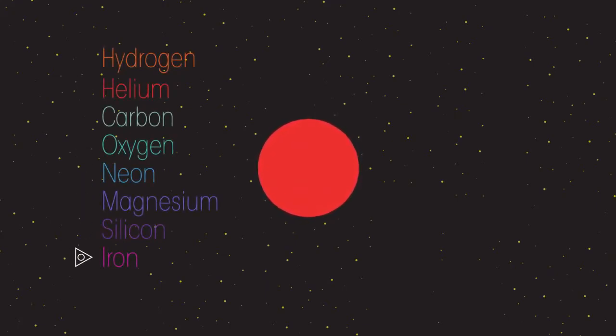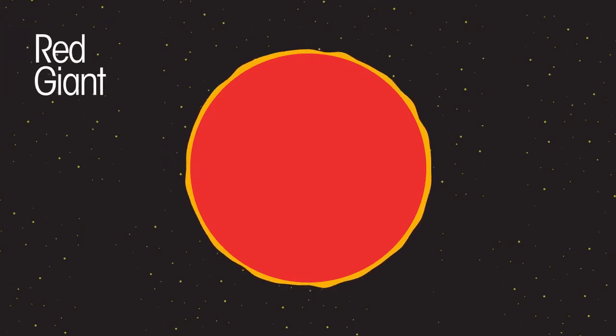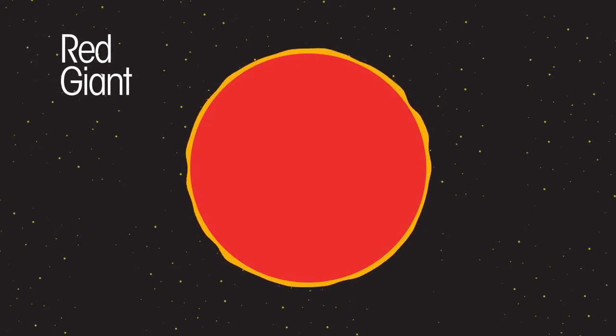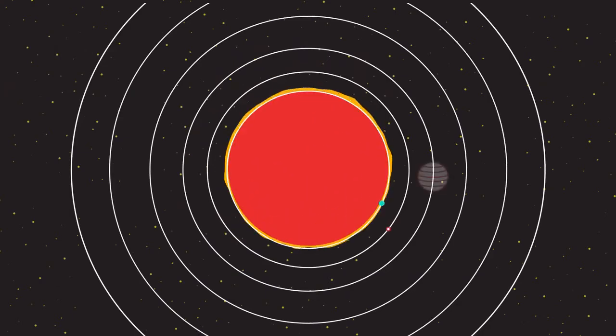To form elements heavier than iron requires an input of energy, which we'll explain a little later. The star now expands and becomes what is called a red giant. When our sun becomes a red giant, it will expand to such a size as to engulf the three inner planets.